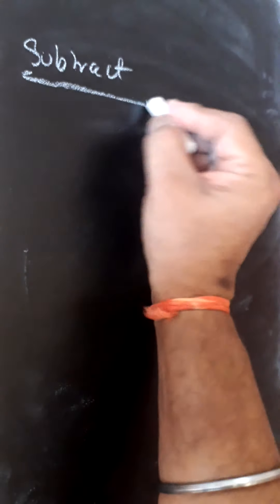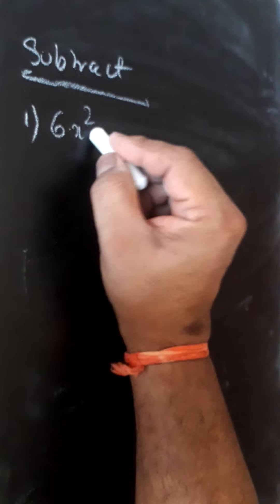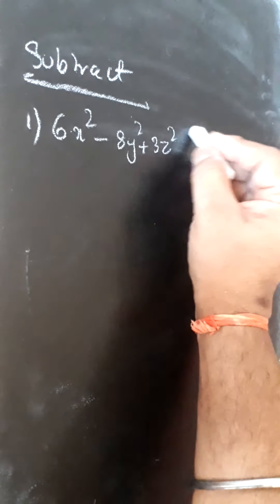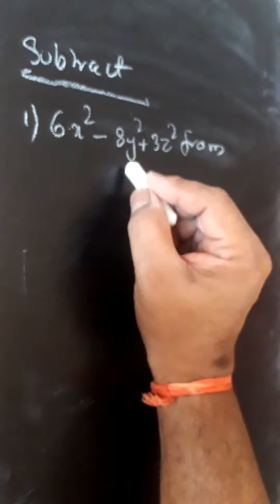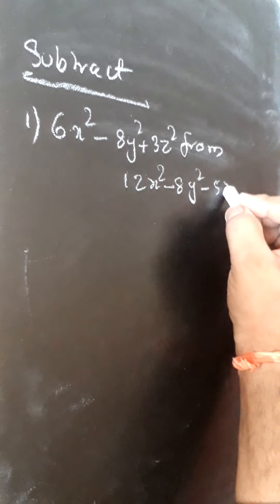Subtract 6x² - 8y² + 3z² from 12x² - 8y² - 5z².